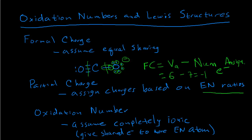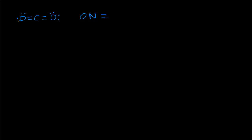It's like treating the molecule as though it were completely ionic. Let's do that for carbon dioxide using the more stable resonance structure. We calculate oxidation number like formal charge: start with the atom's ordinary valence, then subtract the number of electrons assigned to it. For the shared electrons between carbon and oxygen, we assign all of them to oxygen, since oxygen is more electronegative than carbon.